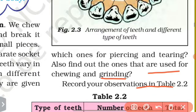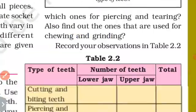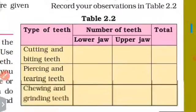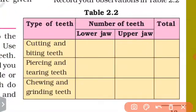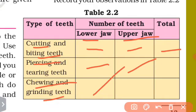Record your observations in table 2.2. Note the types of teeth, the number of teeth, and the difference between cutting, biting, piercing, and grinding teeth in both the upper and lower jaw.